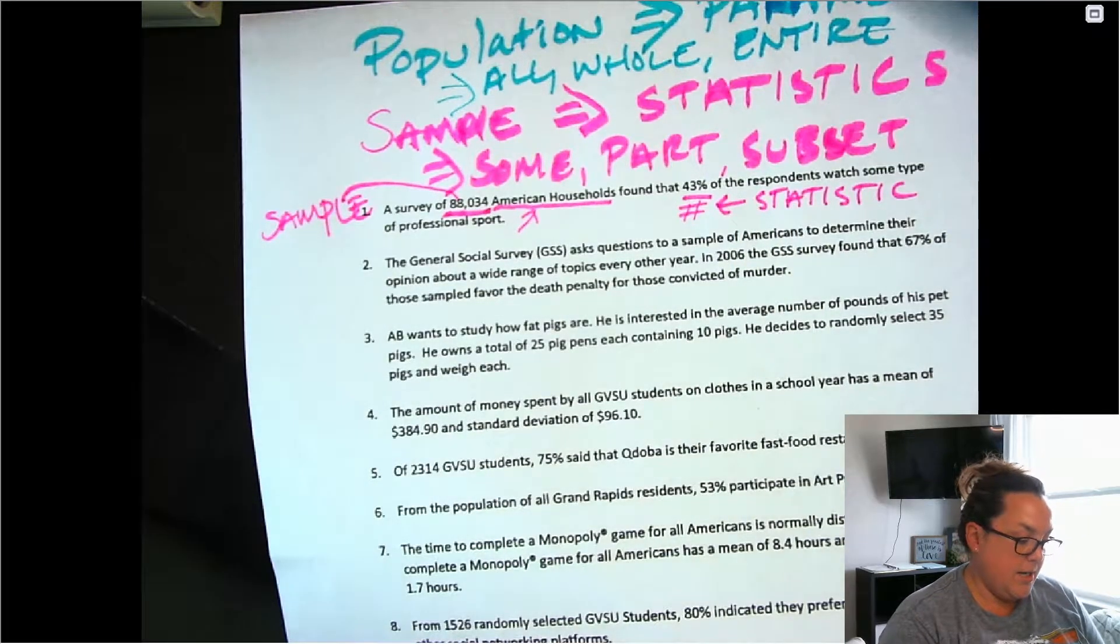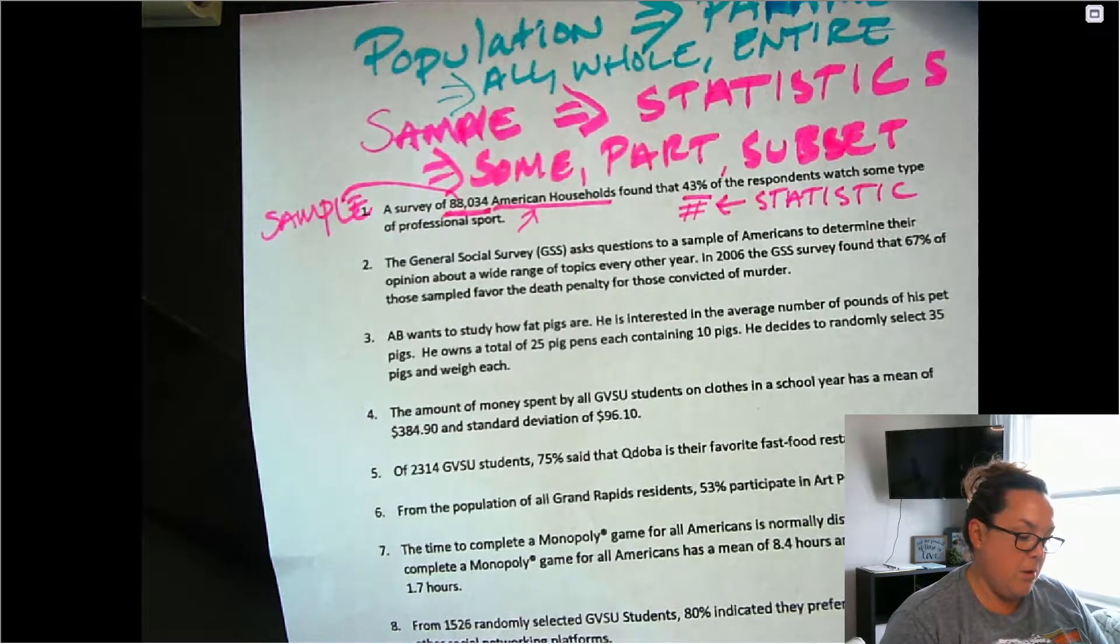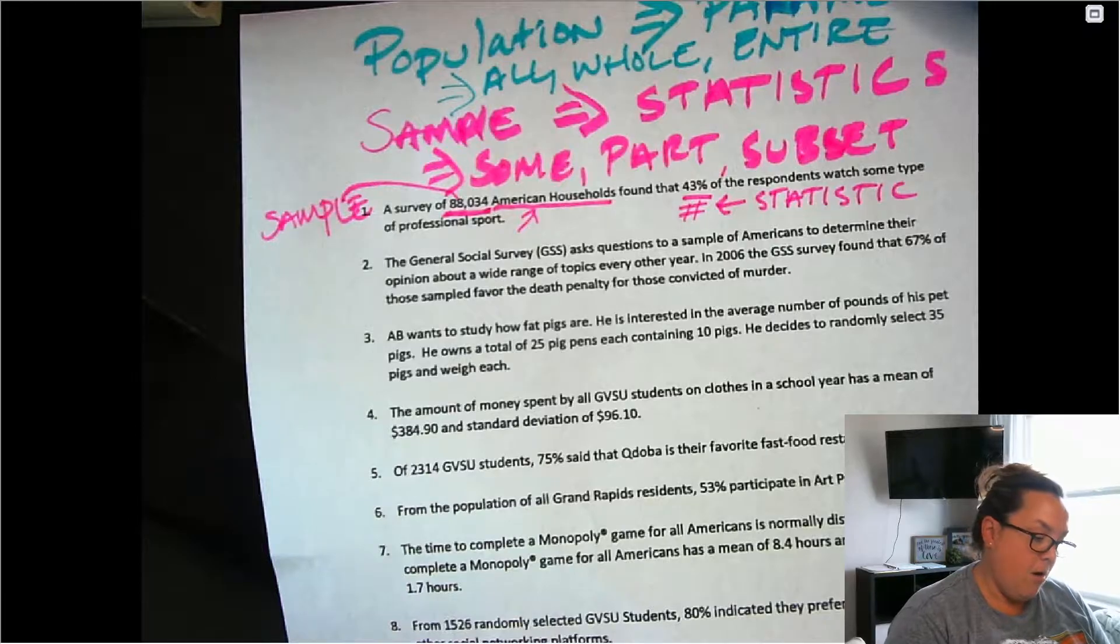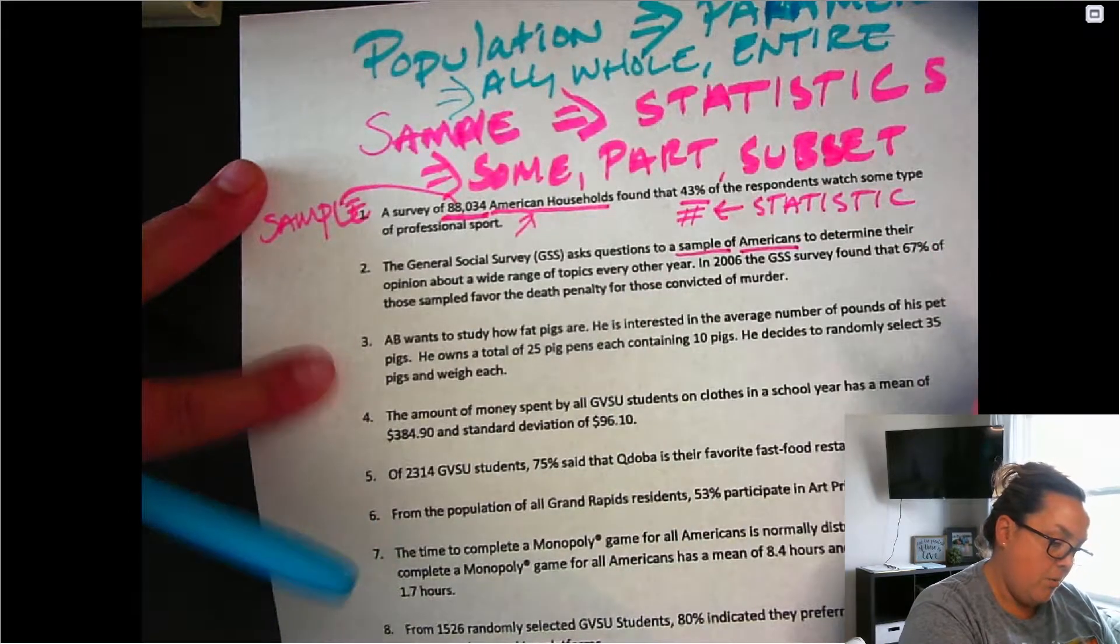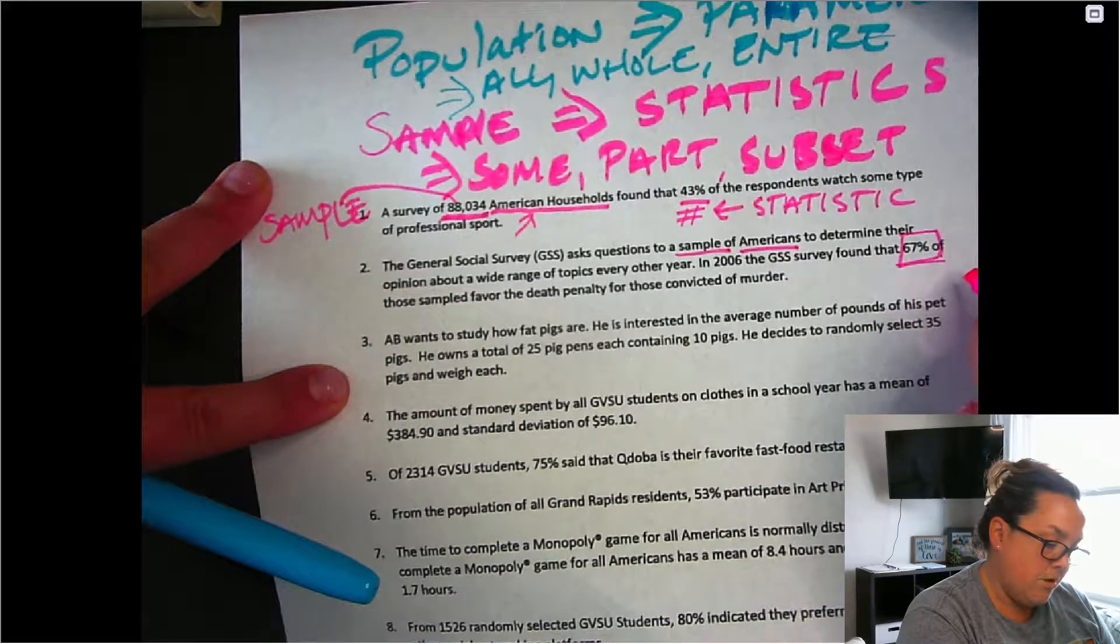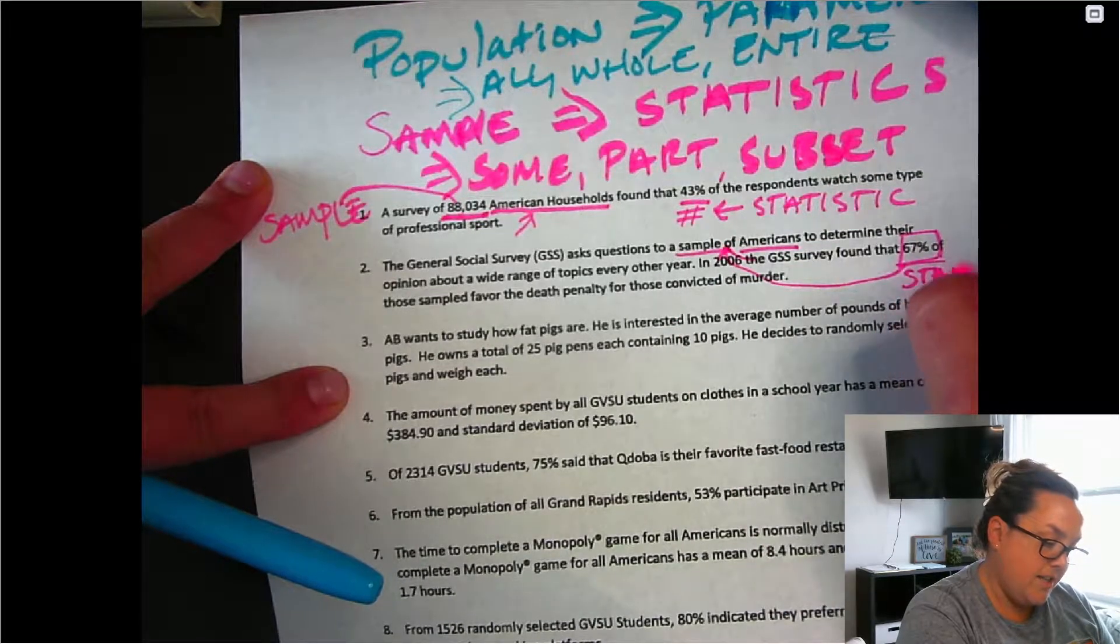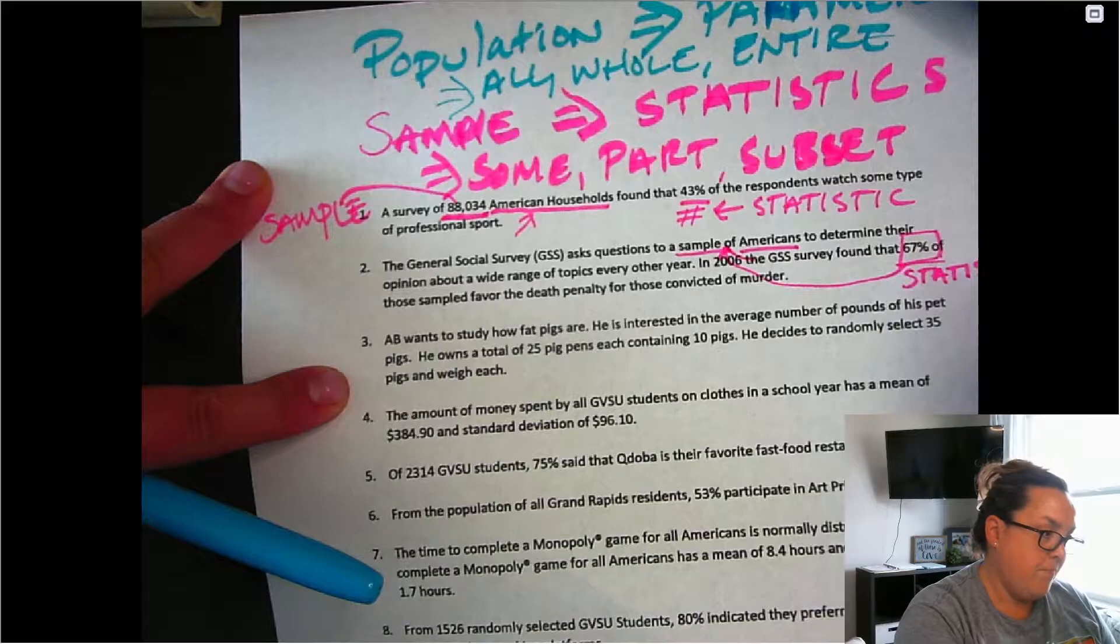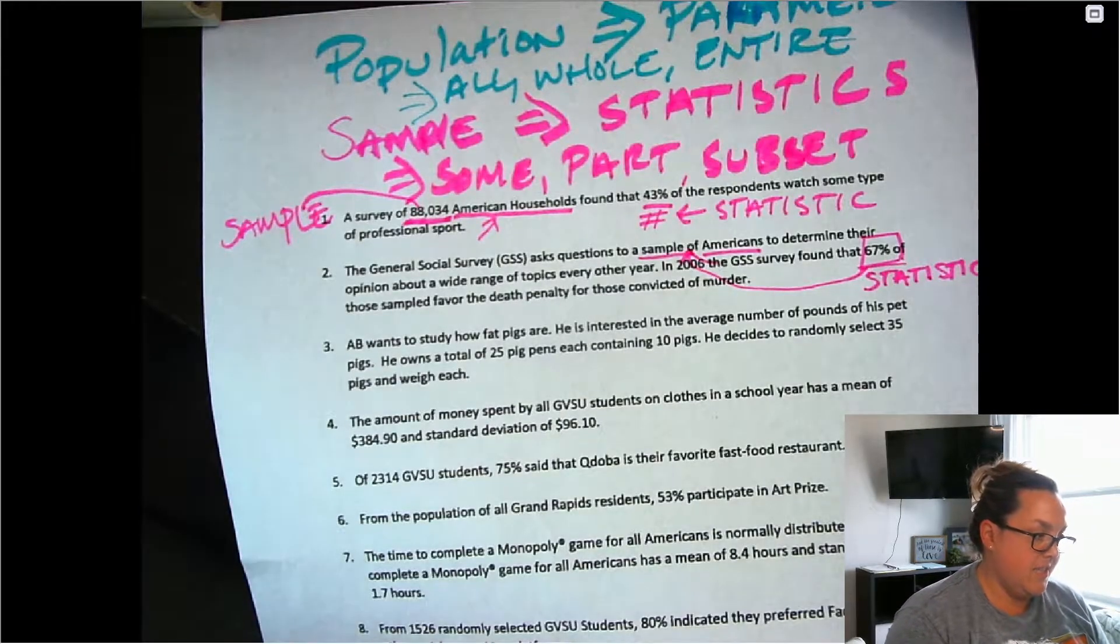All right, next one. The GSS asks questions of a sample of Americans. Now, already it's telling us it's a sample of Americans, which means that the number we get here, 67 percent, is the number referring to that sample. So this is also a statistic. So because that is referring to a sample, it's a statistic.